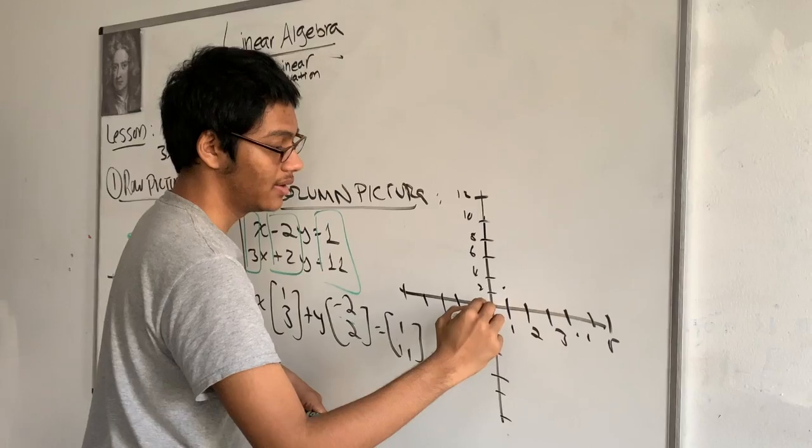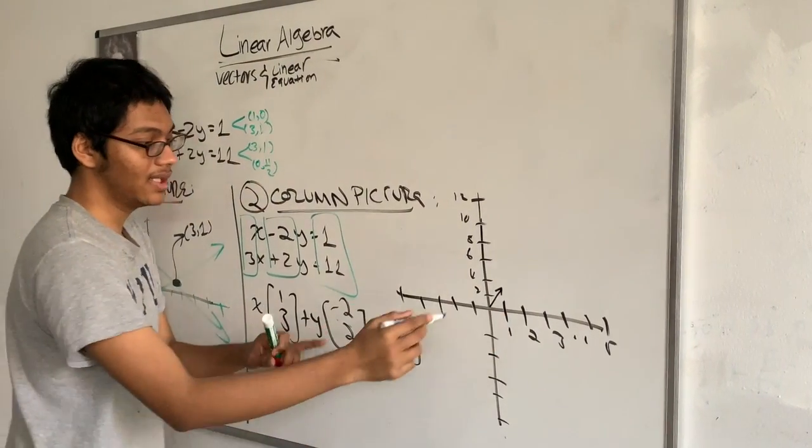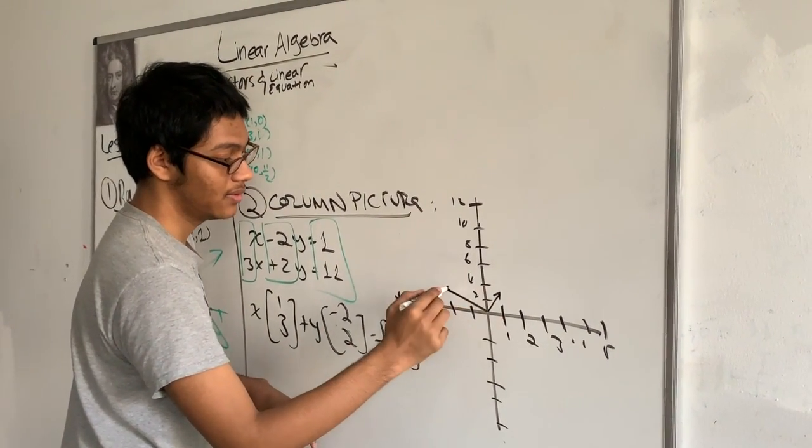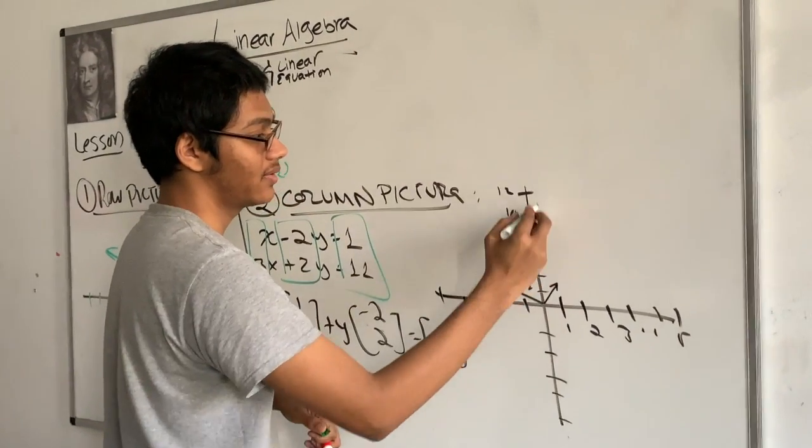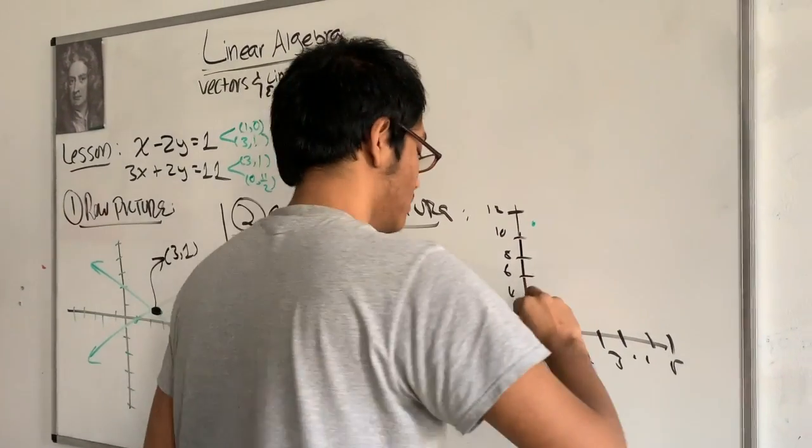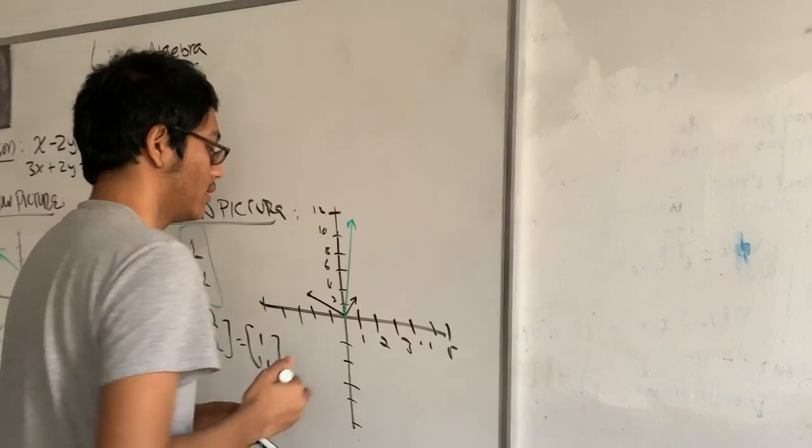So my first vector is 1, 3, so I'll have to go right here. Second one is minus 2, 2, so that's right here. And the vector I want, I'll do in green. And that vector is going to be right here.